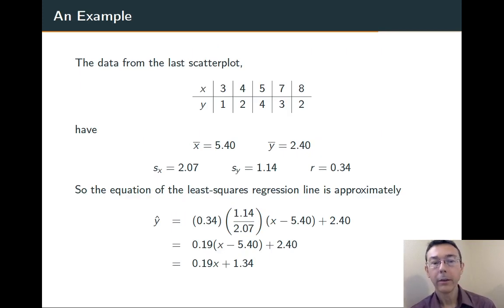It's kind of a pain to calculate. Here's data that corresponds to that scatter plot we had a few slides ago. If we calculate means and standard deviations, we get x bar is 5.4, y bar is 2.4, and so on. The coefficient of correlation is about 0.34, so a moderately weak positive correlation.